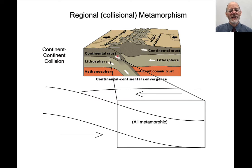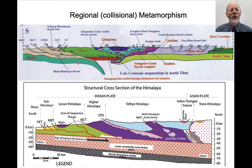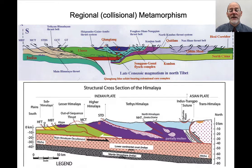In continent-continent collisions, where one continental plate collides with another, there is a whole region of over-thickened crust where all the rocks are metamorphic. For example, in the Indo-Asian collision, India is colliding with Asia, with lots of tectonic activity and thrust faults. In the Lesser Himalayan and Greater Himalayan sequences, these are all metamorphic rocks that were buried under the mountain belt, thrust forward, and exhumed to expose at the surface.